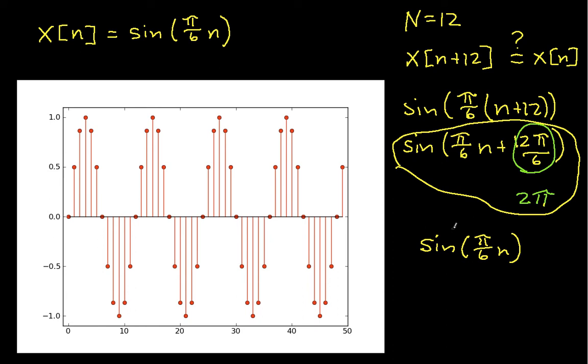A lot of times, especially when we are deriving discrete time signals from a corresponding continuous time signal, we use the fact that the continuous time signal is periodic to show that the discrete time signal is also periodic. And since sine is periodic with period 2π, if I can have this frequency out here times a period equal to 2π, or some multiple of 2π, then I can show that the discrete time signal is periodic. So far, so good. I hope you're having as much fun as I am.